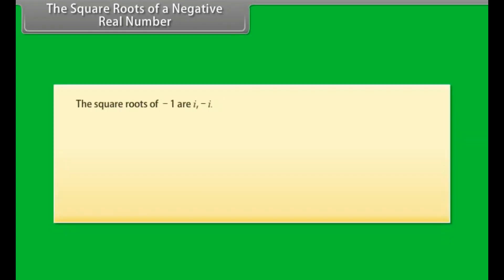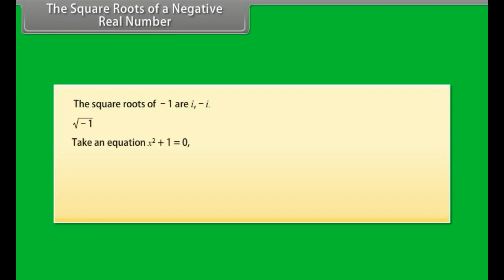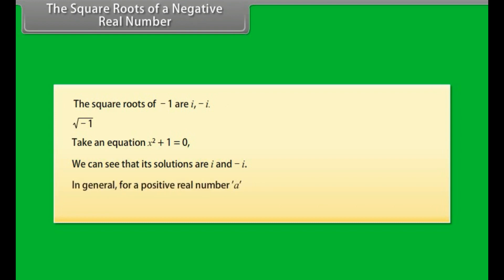The square roots of a negative real number. The square roots of minus 1 are iota and minus iota. For the equation x squared plus 1 equals 0, solutions are iota and minus iota. In general, for a positive real number a, the square root of minus a equals the square root of a into the square root of minus 1, which equals square root of a into iota.